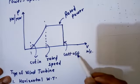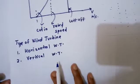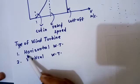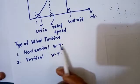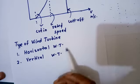Now we will see the types of wind turbines. There are two types of wind turbines: horizontal wind turbine and vertical wind turbine. Thank you very much.